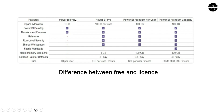For pricing: Power BI Free, the Desktop version, is a free application with no cost. Power BI Pro costs $10 per user per month. Premium Per User is $20 per user per month. Premium Capacity starts at $4,995 per month, which can vary. These are the different free and paid versions available in Power BI.